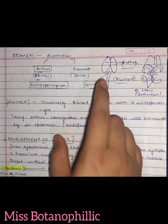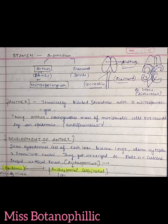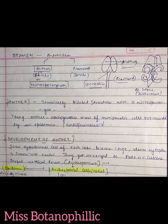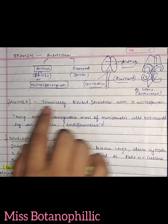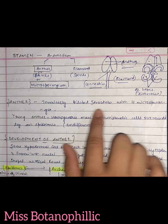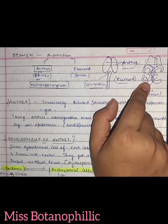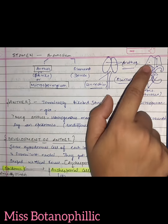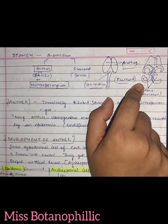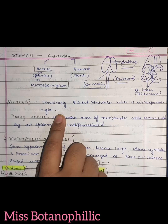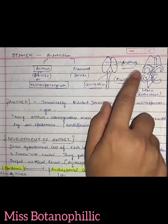Now let's describe the anther. I will tell you about the development of the anther. The anther is a terminally bilobed structure with four microsporangia. It is present in the terminal position and it is bilobed, meaning present in two lobes. Each lobe contains two microsporangia, so there are four microsporangia in total.